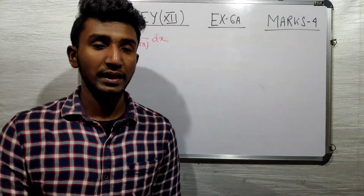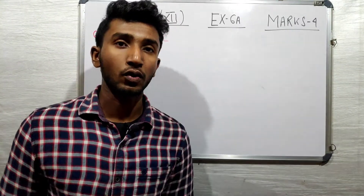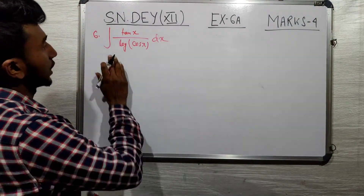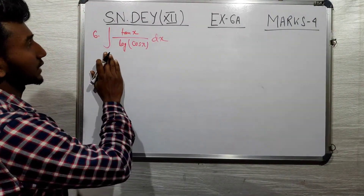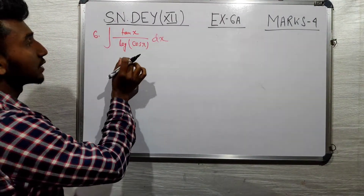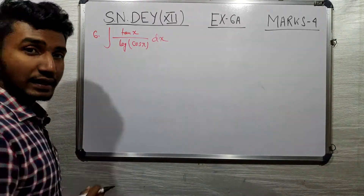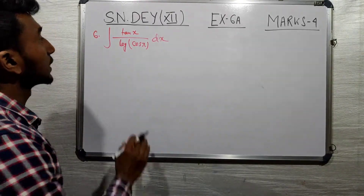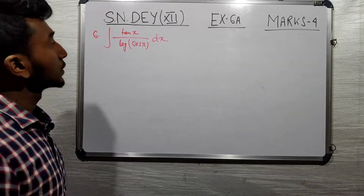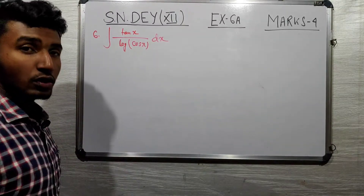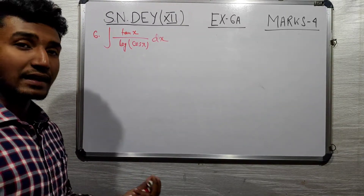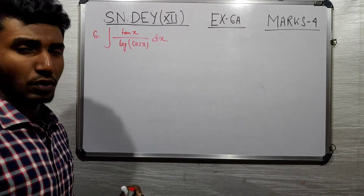Now let's look at what we have done. The problem is the integration of tan(x) divided by log(cos x) dx. We can observe that log(cos x) is related to the derivative of tan(x).